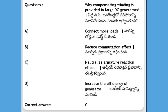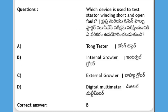Why is compensating winding provided in large DC generators? Options: connect more loads, reduce commutation effect, neutralize armature reaction effect, increase the efficiency of the generator. The answer is C, neutralize the armature reaction effect.